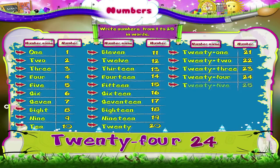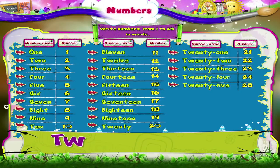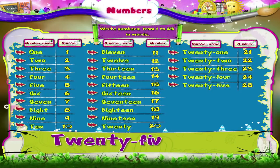T-W-E-N-T-Y 20, F-I-V-E 5 — 25. T-W-E-N-T-Y 20, F-I-V-E 5 — 25. T-W-E-N-T-Y 20, F-I-V-E 5 — 25.